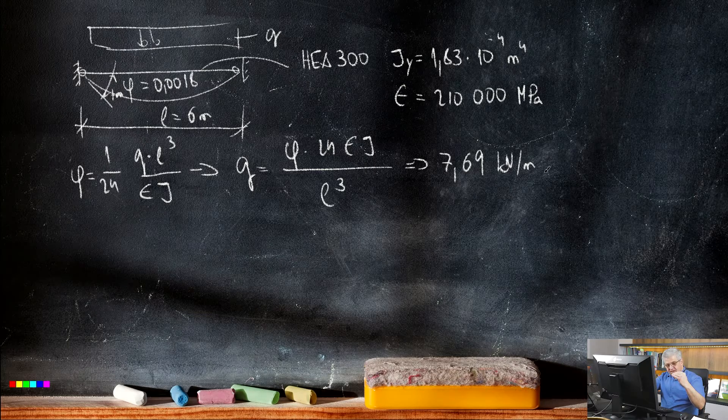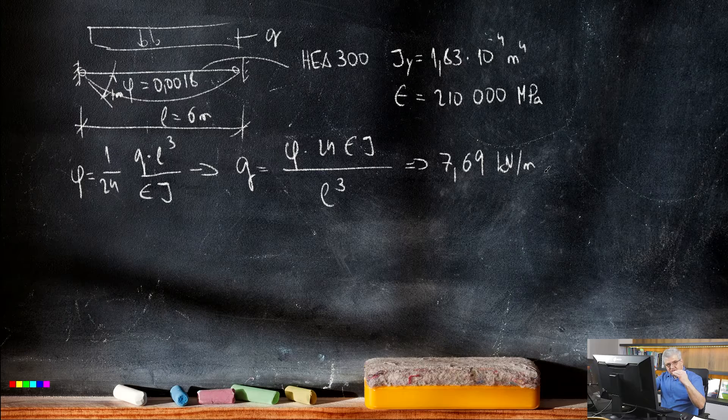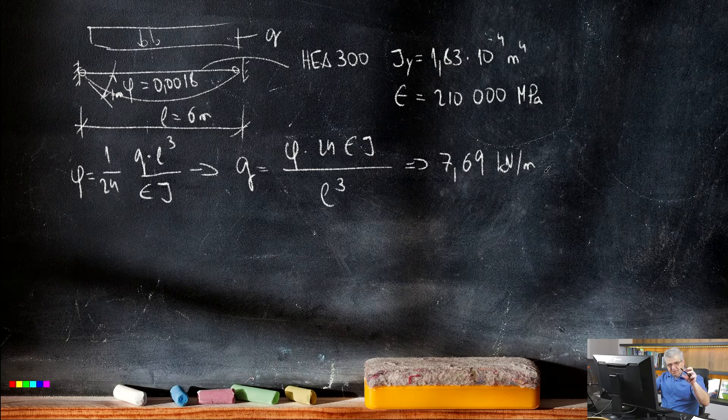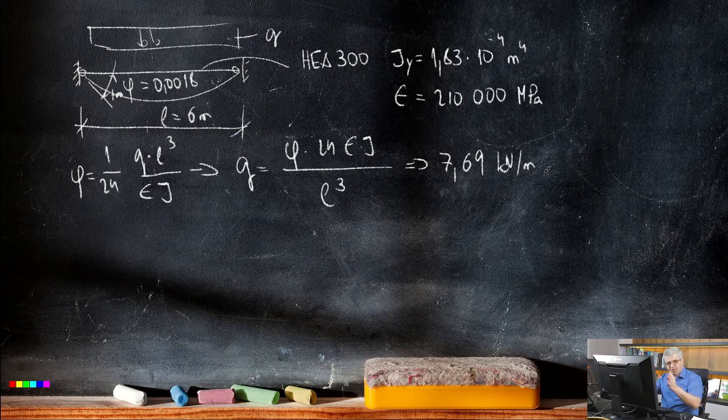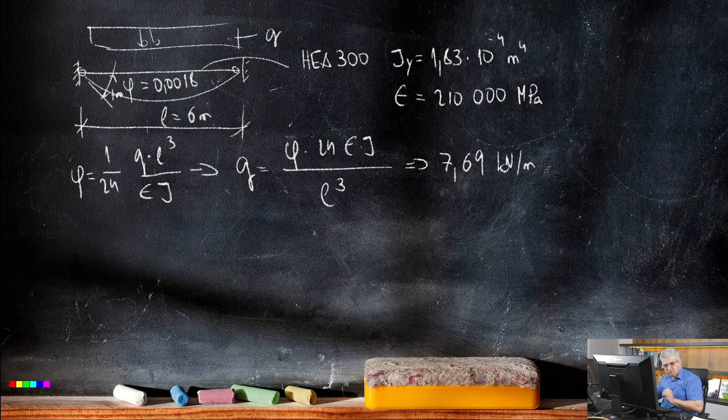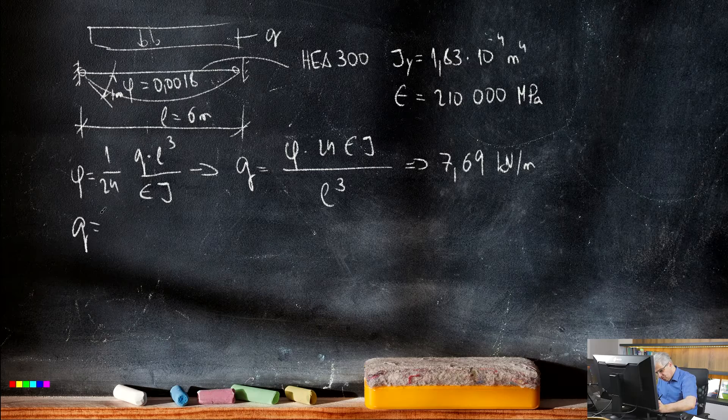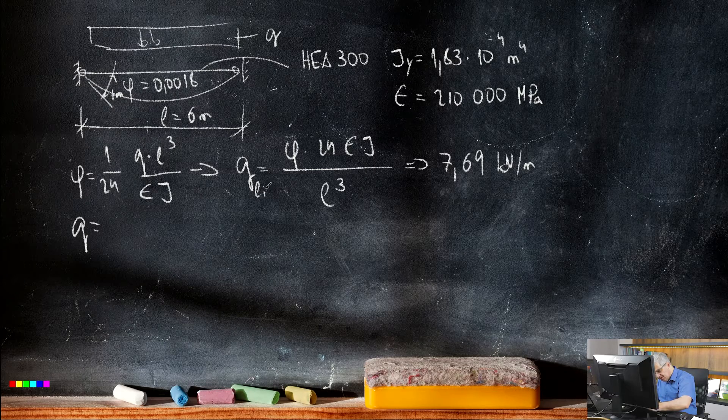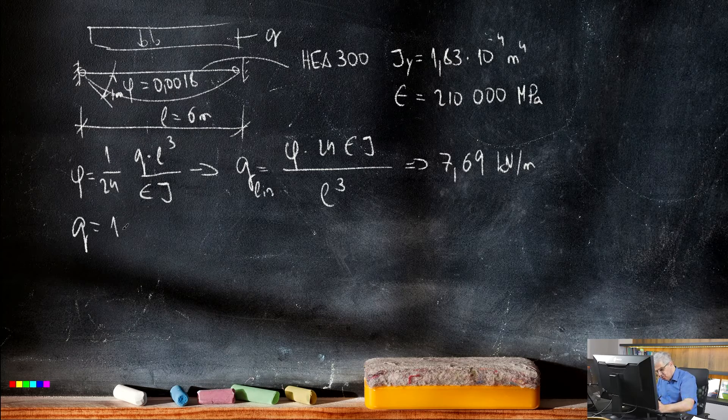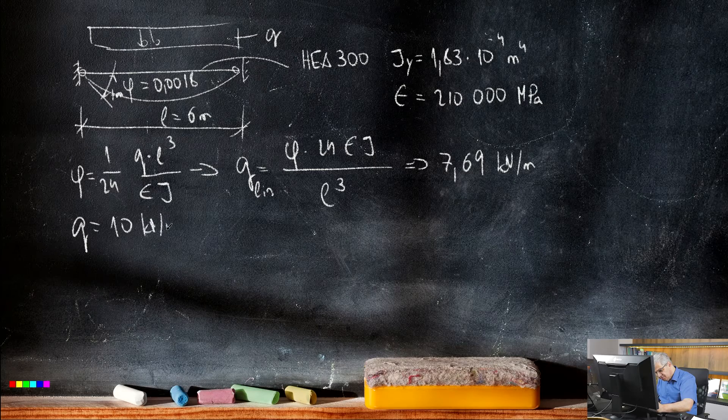This is our limit load for our system where the system will switch from a simple supported beam with hinges to the beam supported with rigid support on both ends. Let's say we use our Q - this is Q, for example limit value. Our Q is 10 kN per meter.